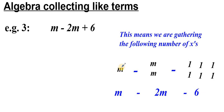This is what this looks like: we've got one m, and then what happens here is we're going to take away two m. So I can cancel that out, and what I'm left with here is negative one m.